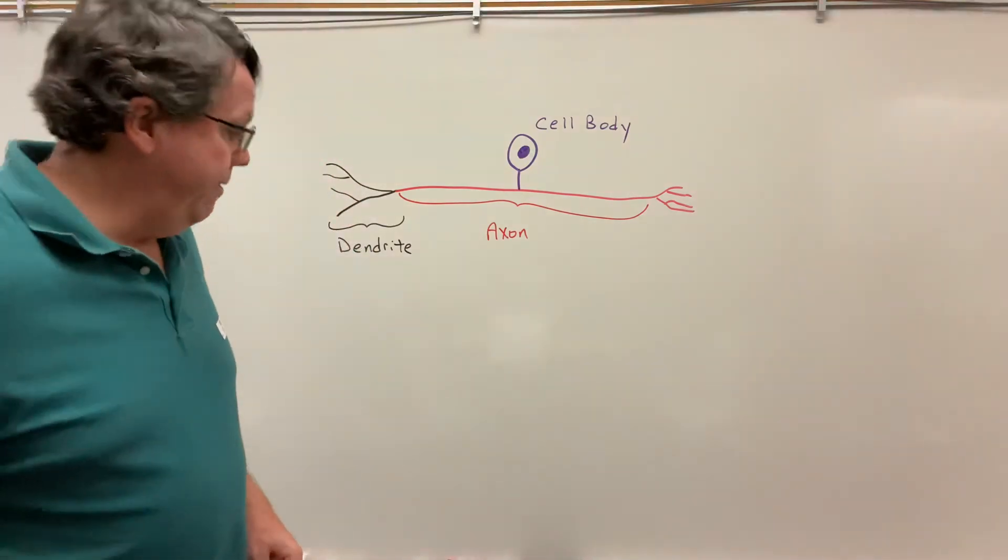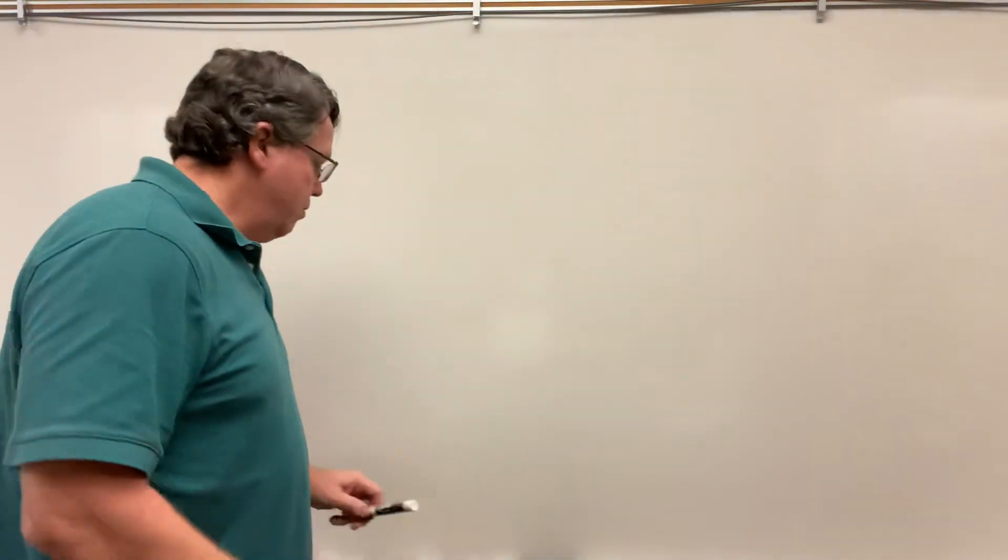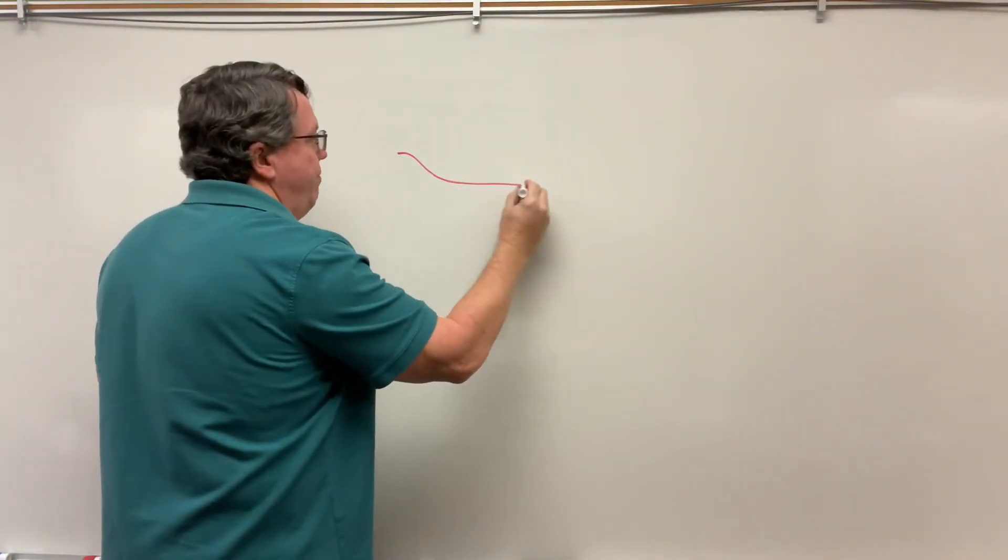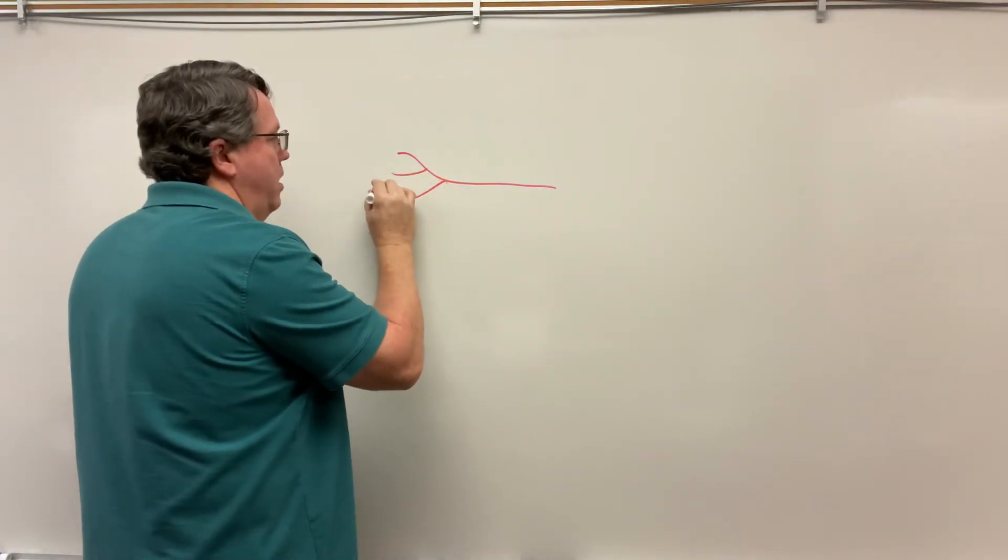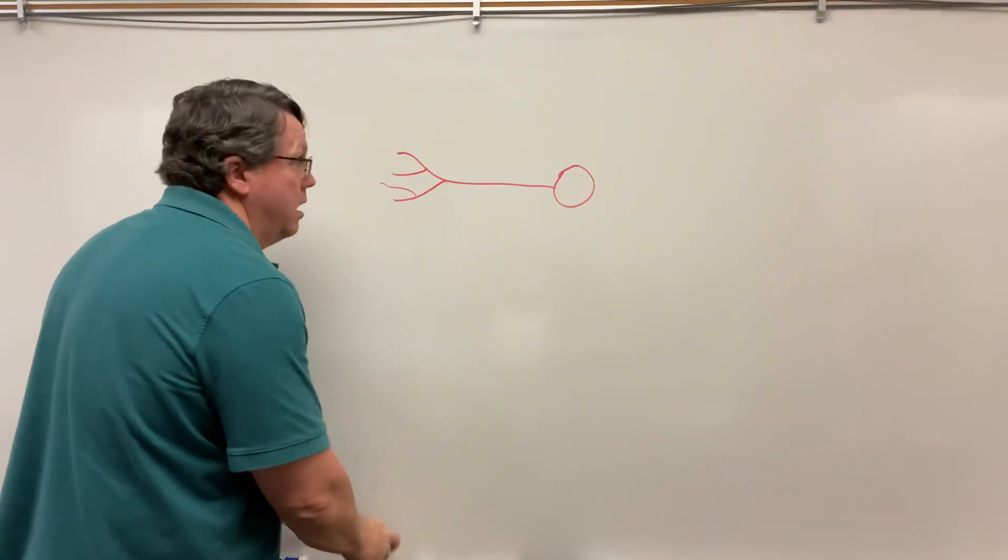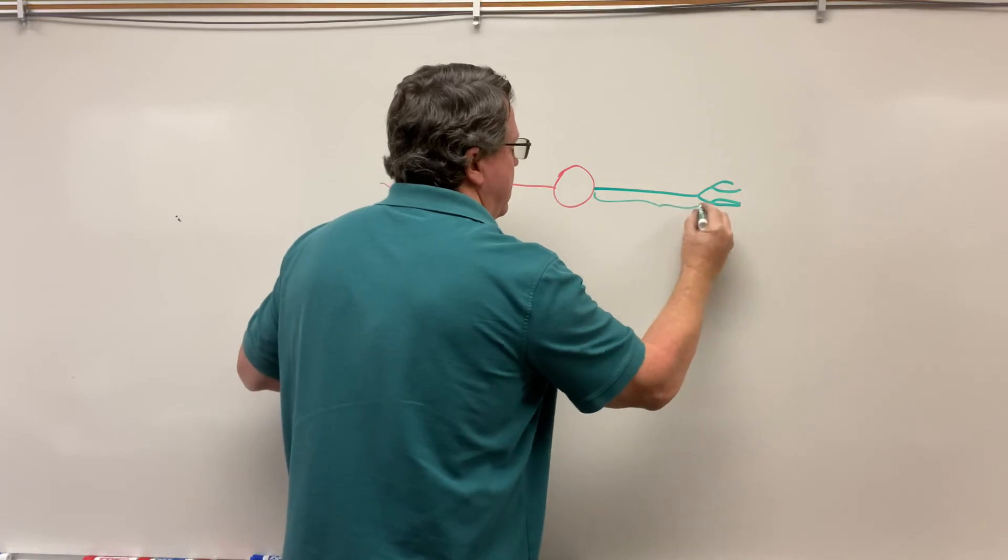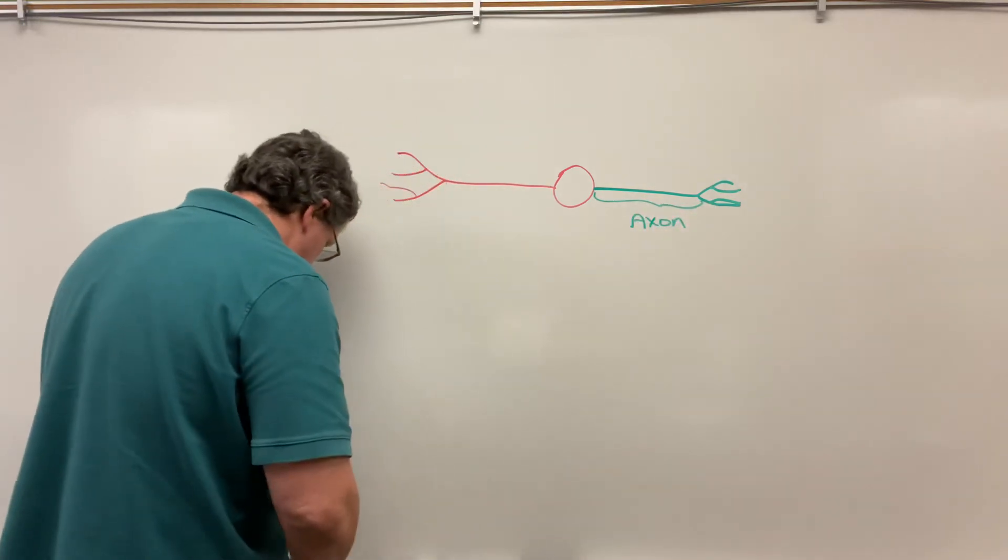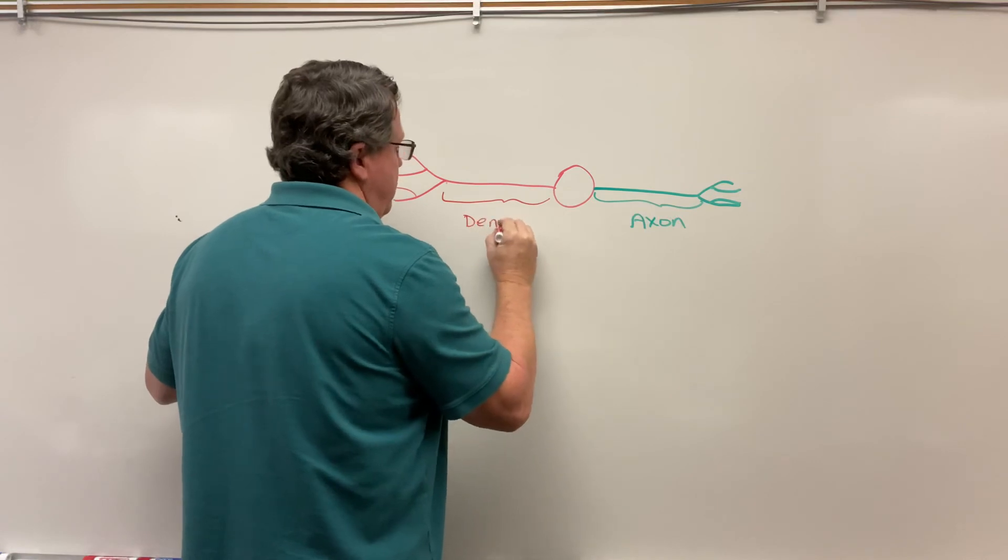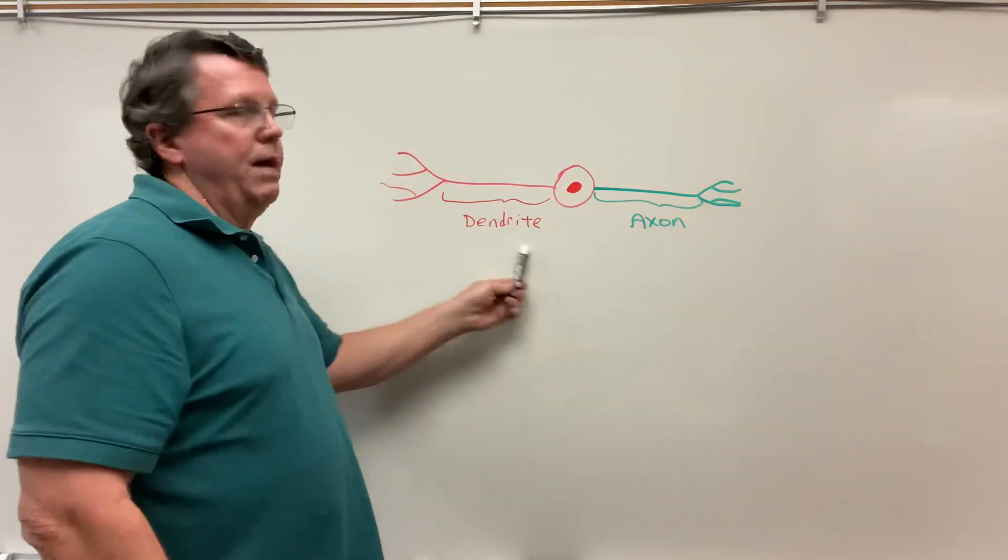And then the last one we have was the bipolar. We said bipolar can be found in special senses. They're also the rarest. The bipolar has one dendrite and one axon. So this is my axon, and this is my dendrite. There's my nucleus. And this is my bipolar neuron.